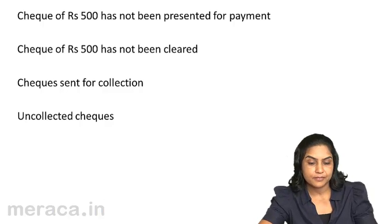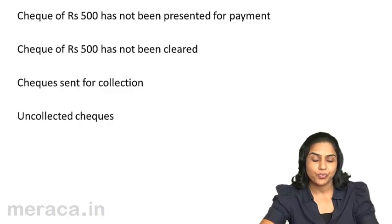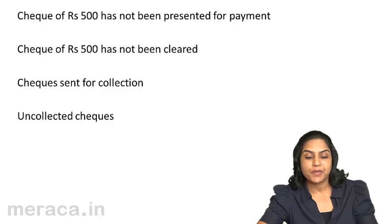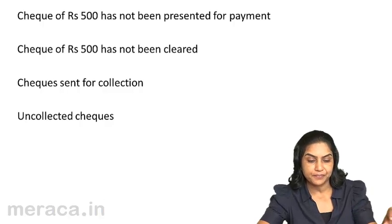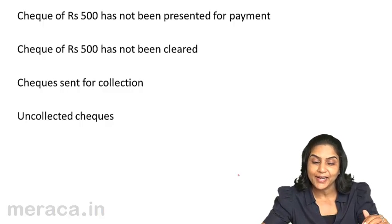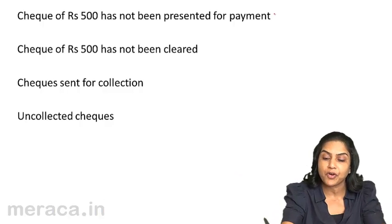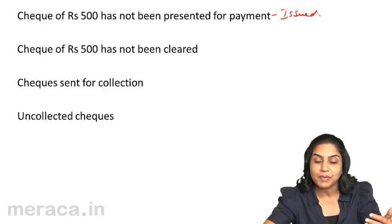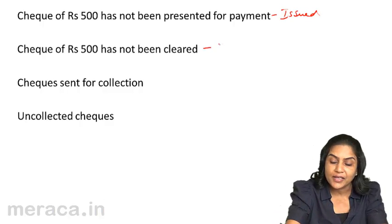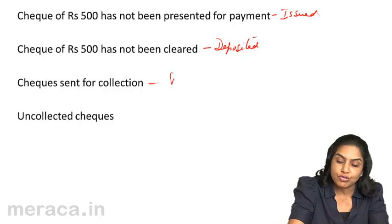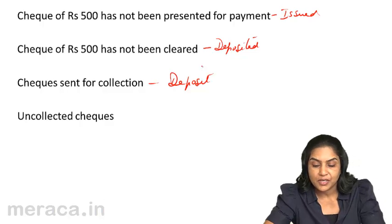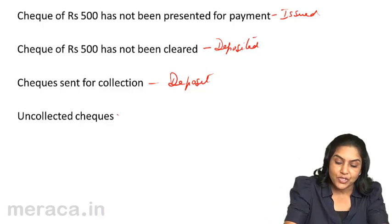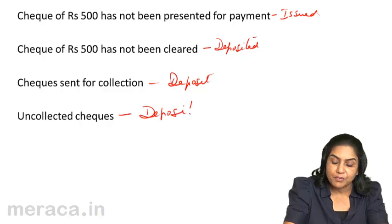These are some terms which are found in public use and sometimes not very clear what is meant by them. A check of rupees 500 has not been presented for payment indicates that a check will be presented for payment — this is a case of check issue. A check has not been cleared would normally indicate that a check has been deposited but it has not been cleared. Checks sent for collection, or uncollected checks, would mean the same thing: the checks have been deposited but have not been approved.